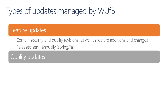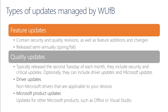Quality updates are aimed at improving the overall stability of the operating system, and are also referred to as cumulative updates. They include security and critical updates, and optionally can also include driver updates and Microsoft product updates. Driver updates are non-Microsoft drivers from OEMs that may be applicable to your devices — offered through the Windows Update service. Driver updates do not include operating system drivers, which are part of the quality updates. Driver updates may also include firmware and BIOS updates.